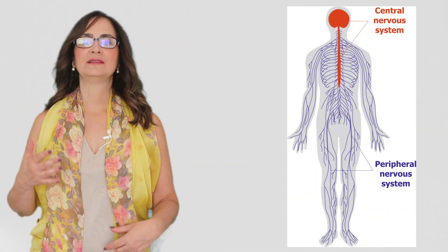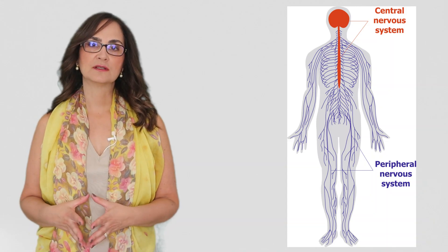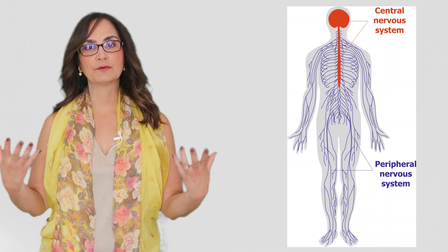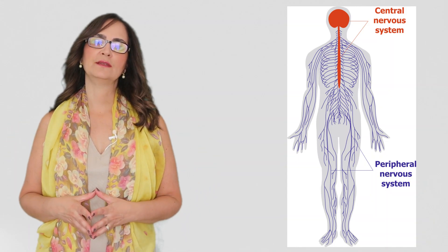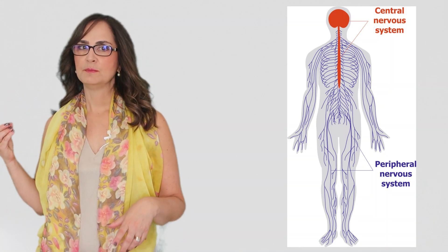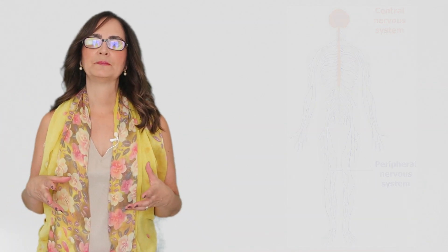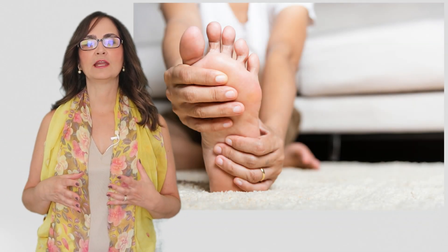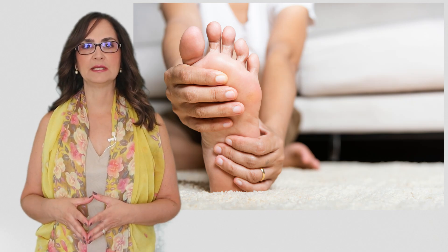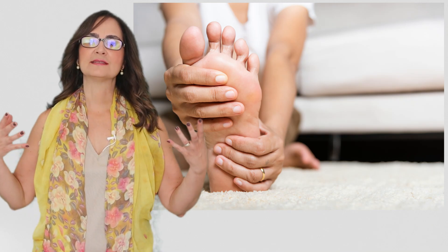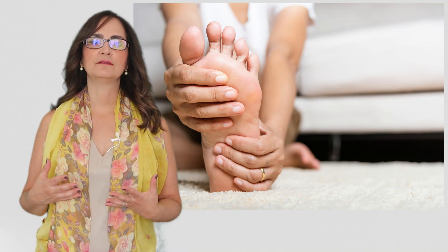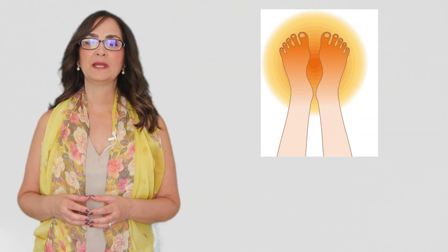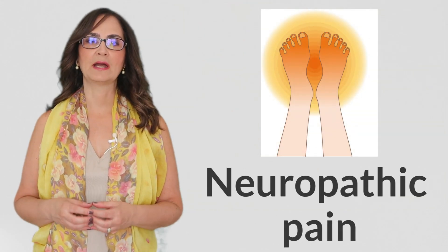Peripheral neuropathy refers to the damage or dysfunction of nerves that lie outside the brain and spinal cord. These nerves, called peripheral nerves, play a crucial role in transmitting signals between the brain and different parts of the body. When these nerves are damaged due to prolonged high blood sugar levels in diabetes, they can misfire and send pain signals to the brain even when there is no injury or external trigger. This abnormal pain perception is what we refer to as neuropathic pain.